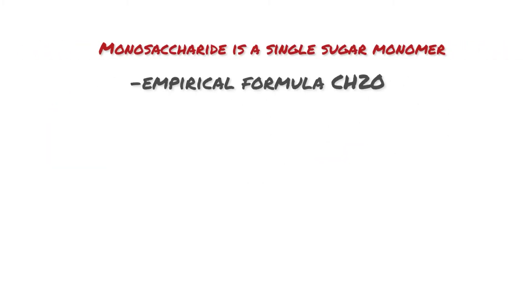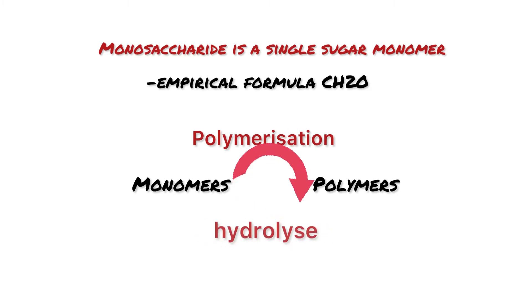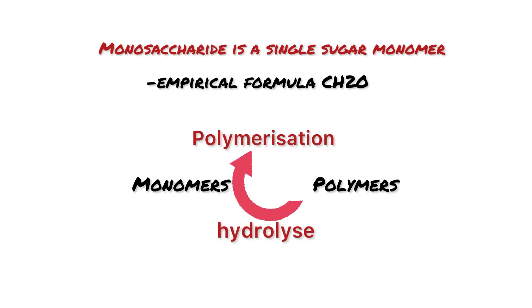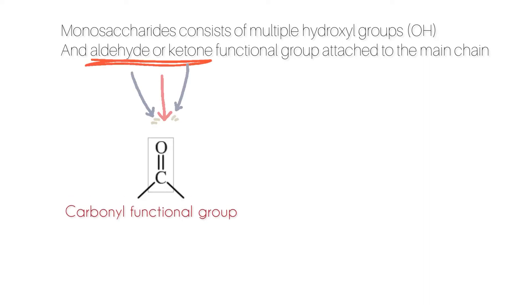A monosaccharide is a single sugar monomer which has the empirical formula of CH₂O. Monomers are small molecules which, through the process of polymerization, create polymers, and during the process of hydrolysis break down back to monomers — there is an infinite cycle of converting between them.